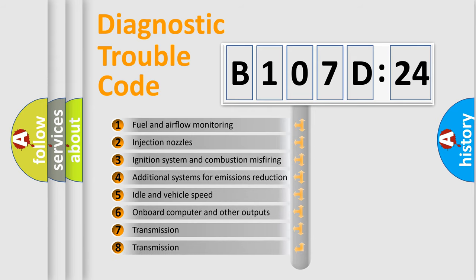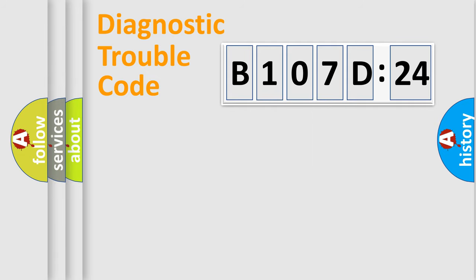The third character specifies a subset of errors. The distribution shown is valid only for the standardized DTC code. Only the last two characters define the specific fault of the group.